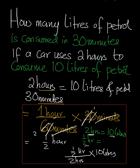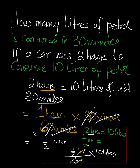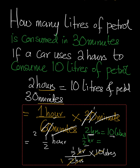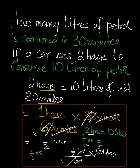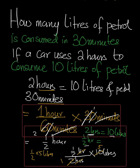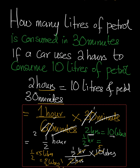And if you do that, the hours cancel out, and the 2 cancels with the 10 to give 5. So we have one half times 5 liters, which gives us 5 over 2 liters. Five over two liters is the same as 2.5 liters. I hope this helps — thank you, and please subscribe.